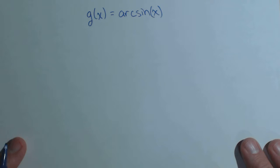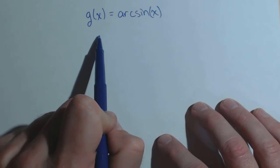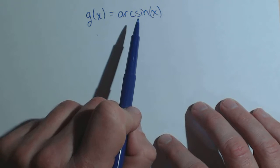In this video, we're going to derive the derivative for arc sine of x using properties of inverses and the chain rule. So my function is g of x equals arc sine of x.